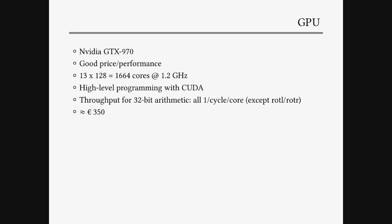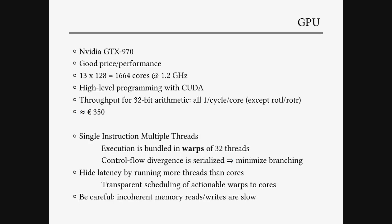For the GPUs, we used the NVIDIA GTX 970 — there's already a new generation upcoming which promises even a higher price-performance ratio. These are basically 1,600 cores running at 1.2 GHz with very high throughput — just one operation per cycle per core, except for bitwise cyclic rotations — and it's very cheap, just 350 euros. The GPU has a single instruction, multiple threads model where execution is bundled in warps of 32 threads. They basically have to execute the same instruction, and if they don't, then everything is serialized — every distinct instruction is executed in a separate cycle — so it's really important to minimize branching.